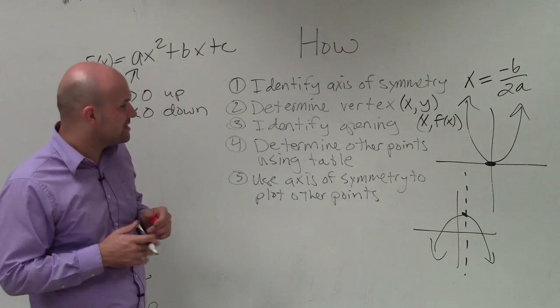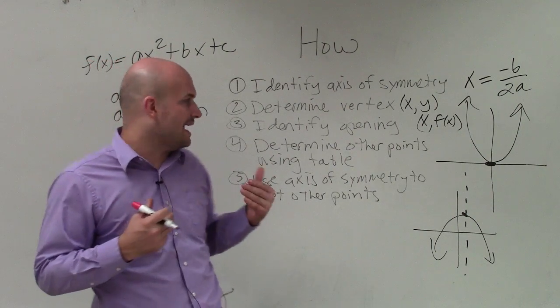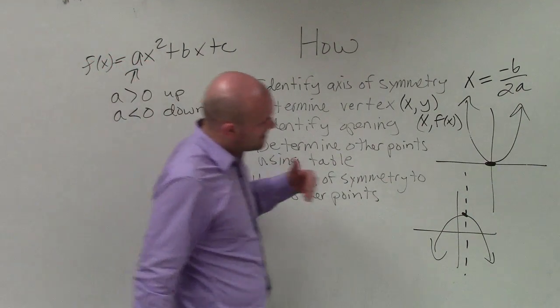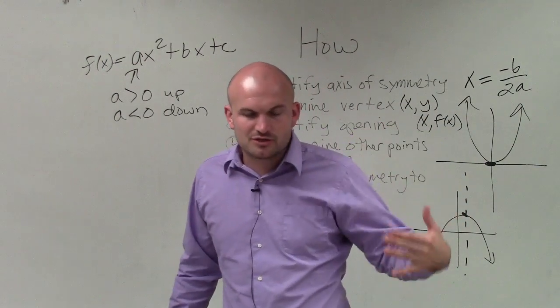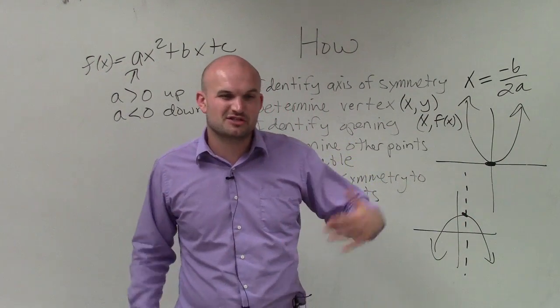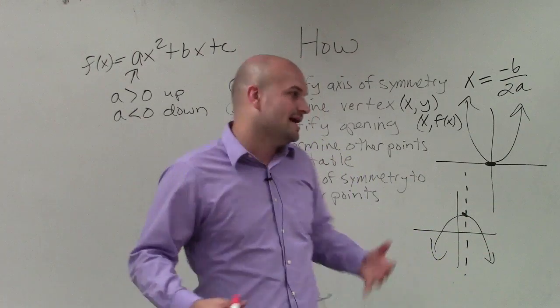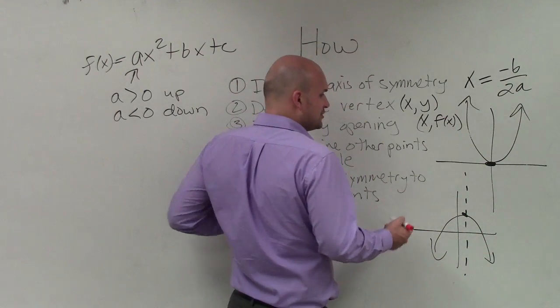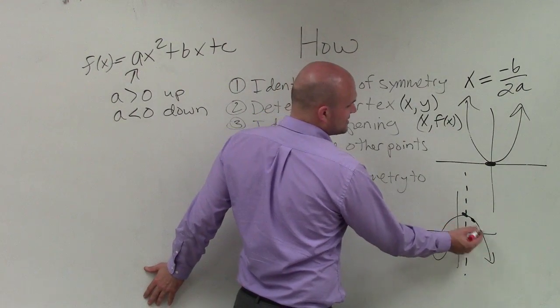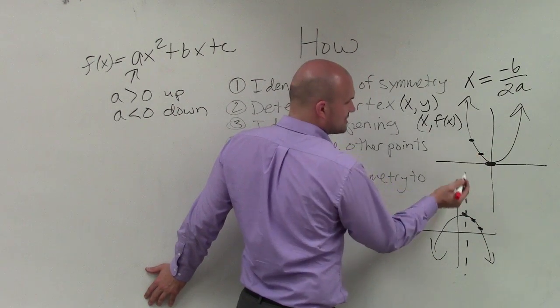The next thing is to determine other points on the graph. Now, notice that when we have the axis of symmetry, it's very important. And usually in my class, I only recommend that my students plot an extra two points. And all we need to do is choose points that are either to the right or to the left of our vertex.